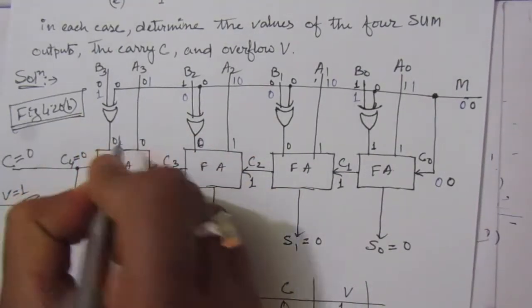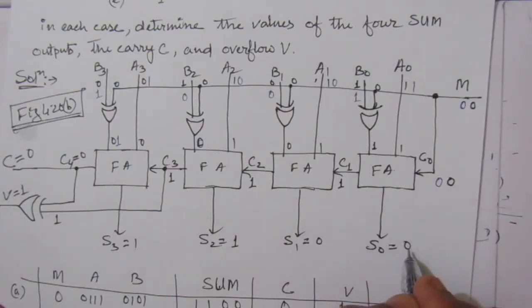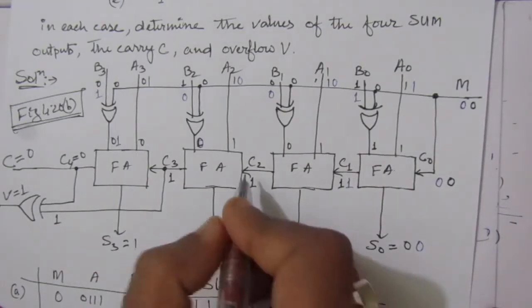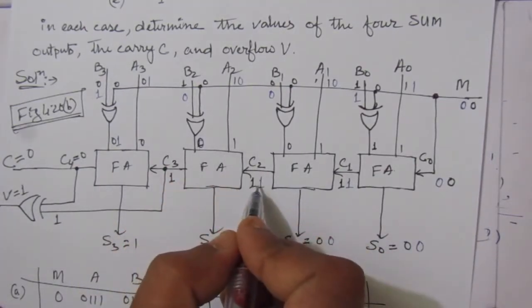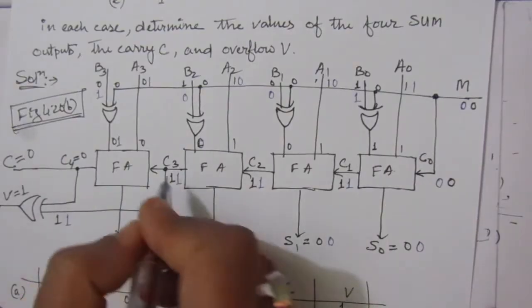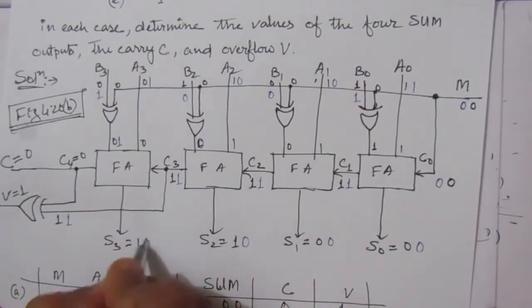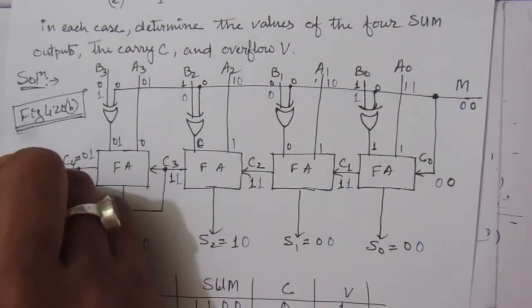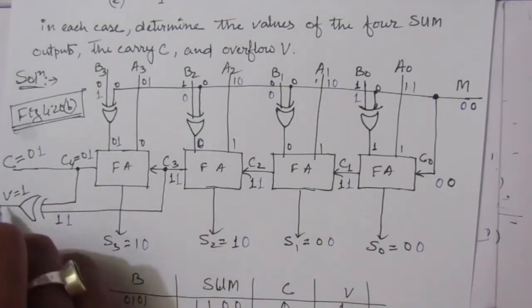Now performing the addition: 1+1+1 gives sum 0 and carry 1. Then 0+1+1 gives sum 0 and carry 1. Then 1+0+1 gives sum 0 and carry 1. The carry output C is 1, and the overflow V is 1 XOR 1 which equals 0. So C=1 and V=0.